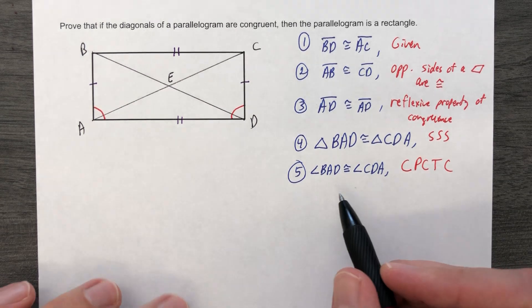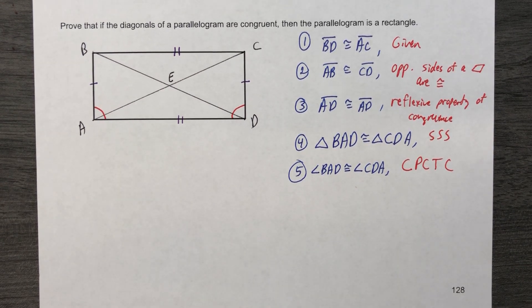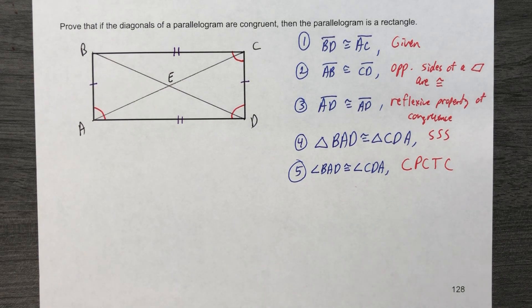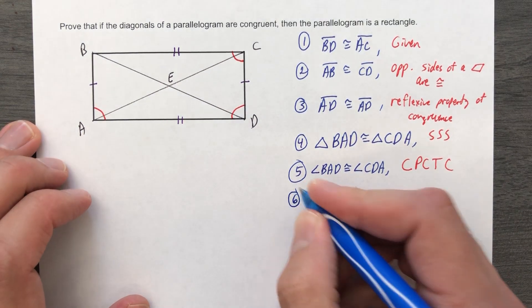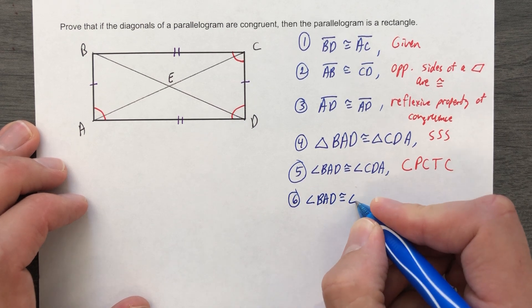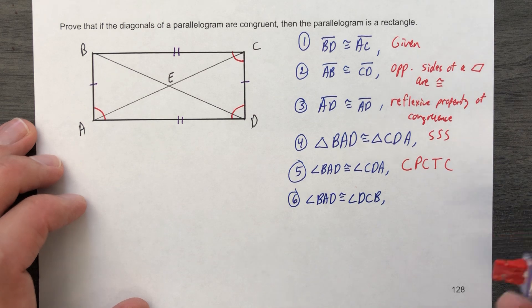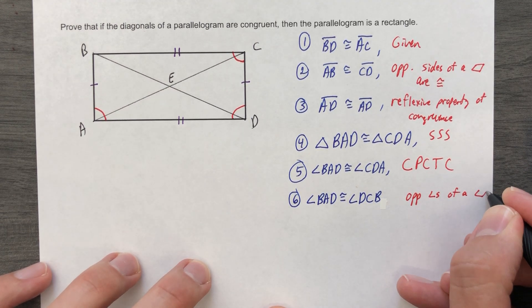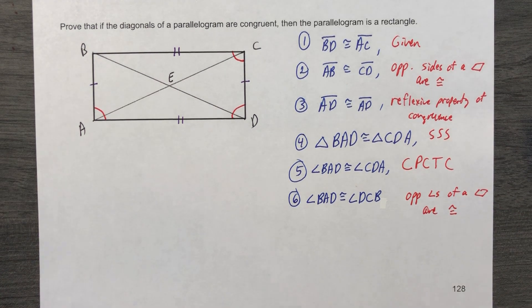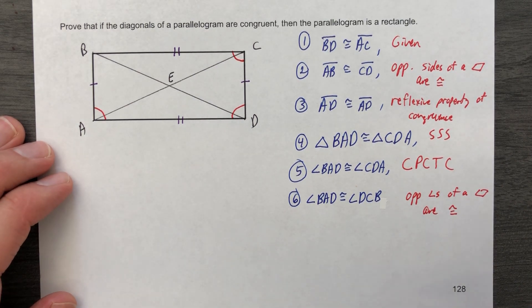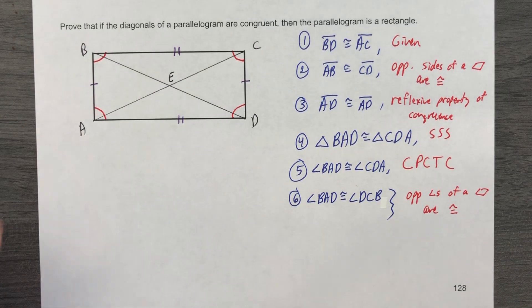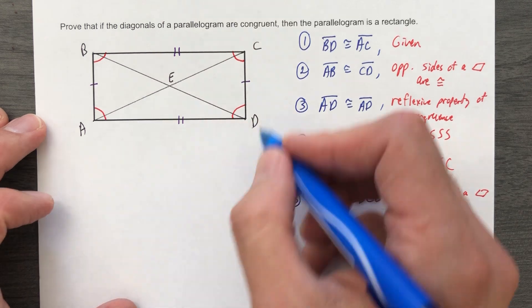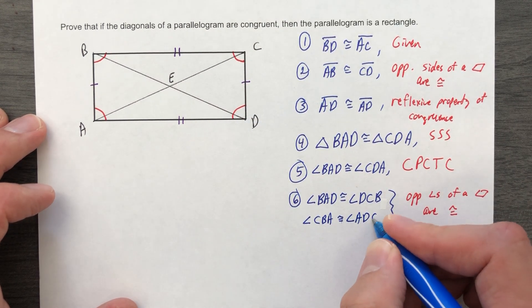Six, to be exact. So now that we know that BAD is congruent to CDA, we can do some other stuff with this. I'm going to go a little crazy on you here. We know that angle BAD is congruent to angle DCB. The reason for that is because opposite angles of a parallelogram are congruent. While we're at it, same step. We're going to say that angle CBA is congruent to angle ADC. All for the same reason.